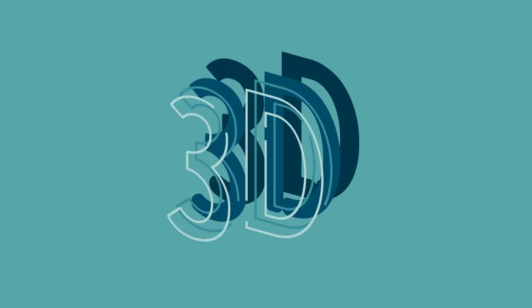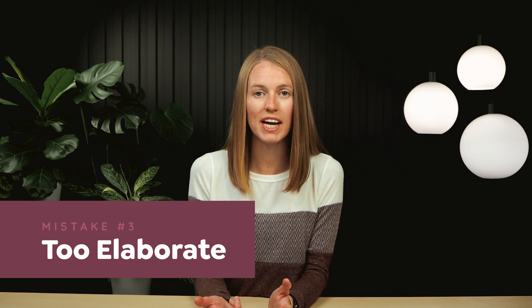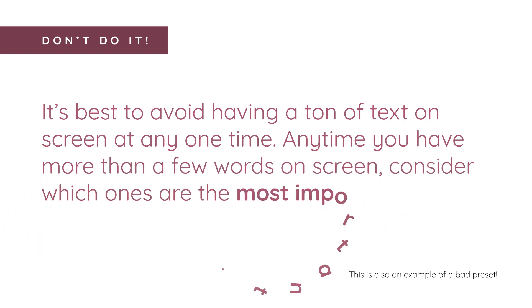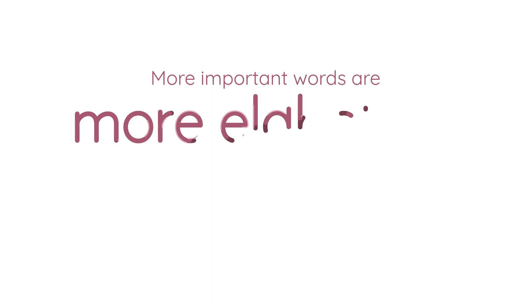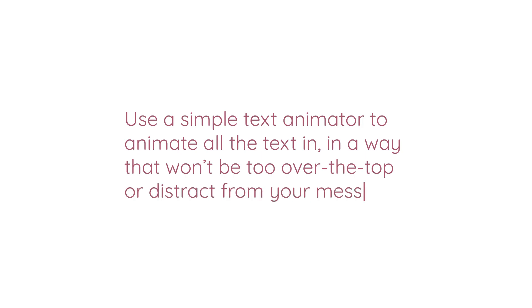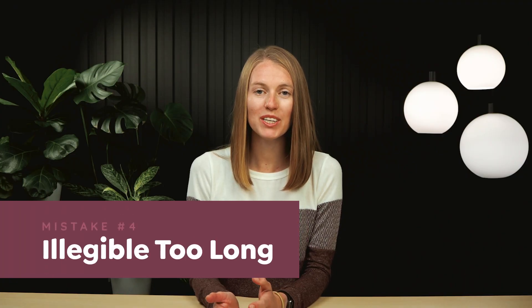One of the reasons that some of the default text animator presets aren't so great is because they're too elaborate. But using text animators is not the only way to animate text — you can also animate letters drawing in or animate the letters in a custom way. No matter the style of text animation, it's possible to overdo it. So mistake number three is having too much text animated in too fancy of a way. It's best to avoid having a ton of text on screen at any one time. If your text looks like a captcha, you're doing it wrong.